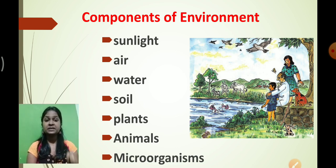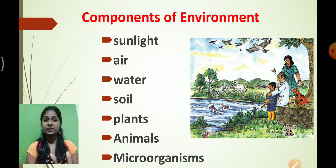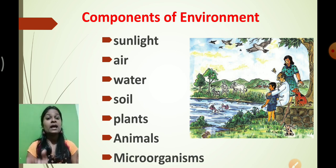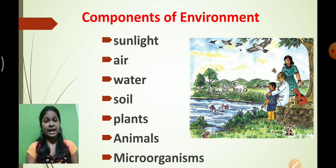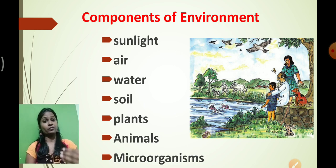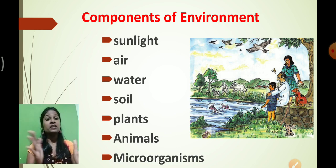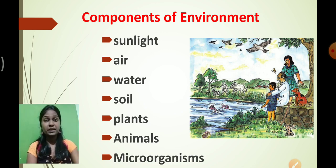These things which are present in the nature, we call them components of environment. Many of the things we get from nature — some come under the living thing category and some under the non-living thing category. In the animal category, aquatic animals, birds, and even we humans also come under the animal category.